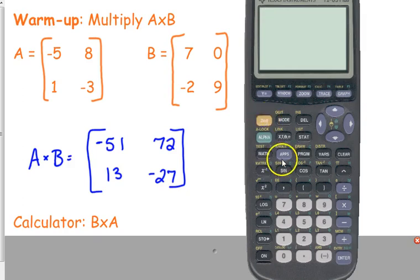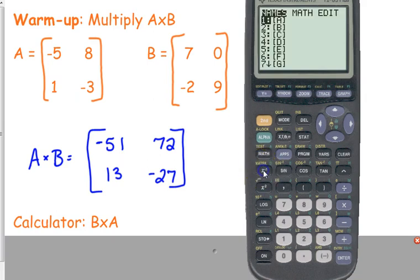If you press the second button and the button about on the fourth row down from the second button, the one that has the x with the negative one exponent, above that you see M-A-T-R-X. That's standing for matrix. So if you press second and that button right there, you'll come up with a matrix menu.